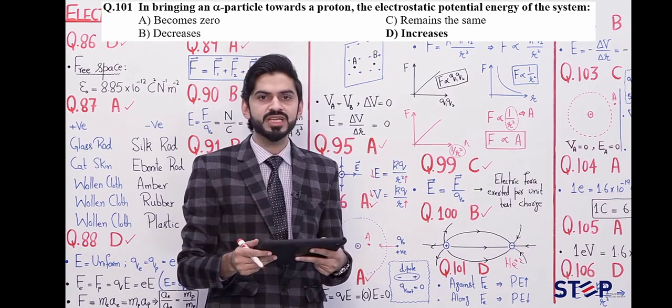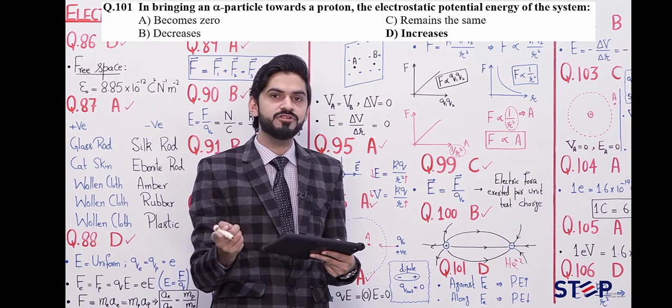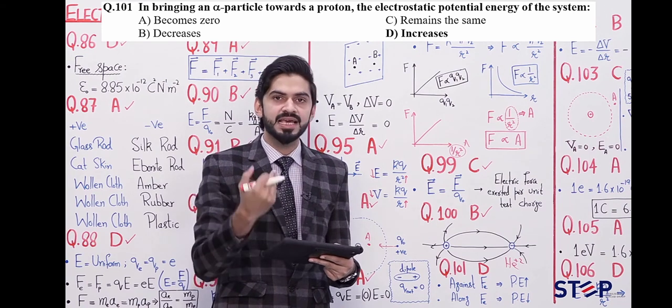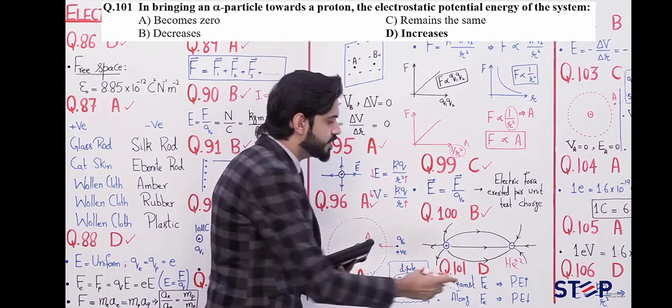Now what is the information in this question? Bringing an alpha particle towards a proton means we are moving the charged particle alpha against the electric force. So what is asked in this question? The electrostatic potential energy of the system.